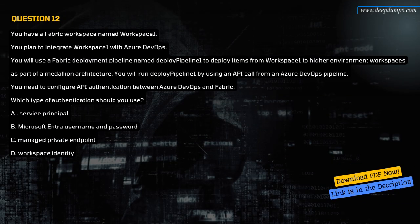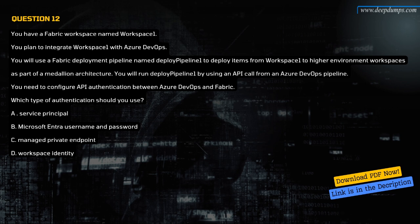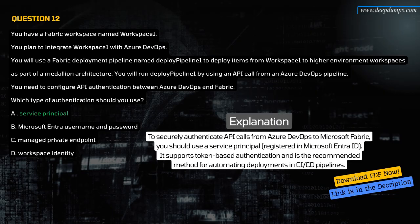Question 12. You have a Fabric workspace named Workspace-1. You plan to integrate Workspace-1 with Azure DevOps. You will use a Fabric deployment pipeline named DeployPipeline-1 to deploy items as part of a Medallion architecture, running it via an API call from Azure DevOps. You need to configure API authentication between Azure DevOps and Fabric. Which type of authentication should you use? A. Service principal. B. Microsoft Entra username and password. C. Managed private endpoint. D. Workspace identity. The correct answer is A. Service principal. To securely authenticate API calls from Azure DevOps to Microsoft Fabric, use a service principal registered in Microsoft Entra ID. It supports token-based authentication and is the recommended method for automating deployments in CI/CD pipelines.